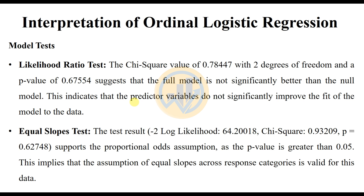The equal slope test result shows a minus 2 log likelihood of 64.20, chi-square value of 0.93, and p-value of 0.62. This supports the proportional odds assumption, as the p-value is greater than 0.05. This implies that the assumption of equal slopes across the response categories is valid for this data.